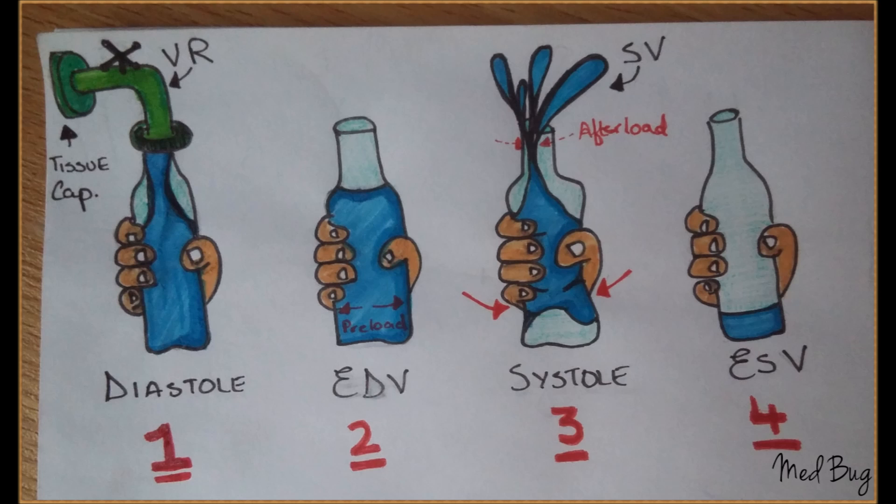Finally, we come to stage four, where whatever volume of blood is left in the bottle is basically called the end-systolic volume.